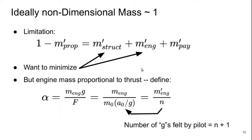But the engine mass is typically proportional to the thrust it produces. So we define a parameter alpha, which is the mass of the engine times gravitational acceleration over the thrust. We can write that as M'engine over N. N is the number of G's felt by the pilot minus gravitational acceleration. So the actual number of G's of acceleration one would feel is N plus 1.